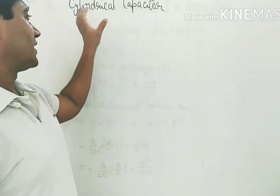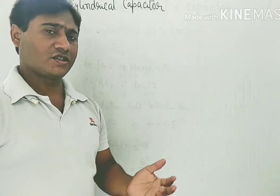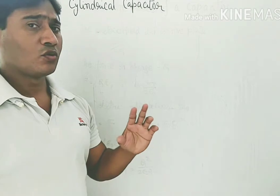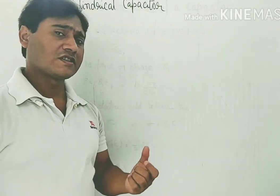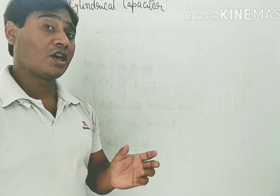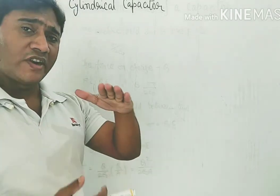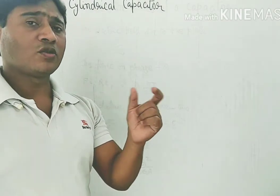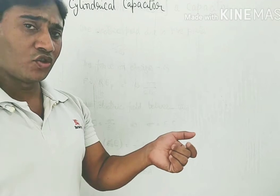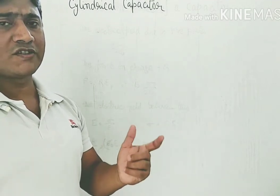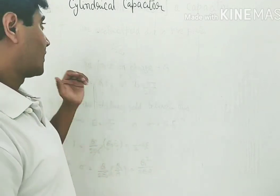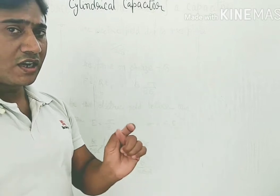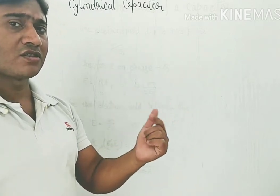Let's now look at the cylindrical capacitor. In the previous lecture, I gave a brief idea about the cylindrical capacitor — what it is, how it is made, and how the capacitance can be calculated knowing the length and the inner and outer radii of the coaxially placed cylinders. Now let's derive how that last outcome I wrote in the previous lecture comes, through an analytical treatment.